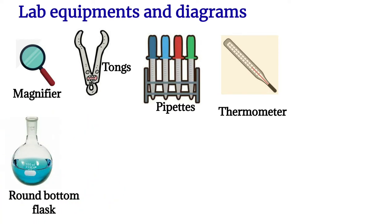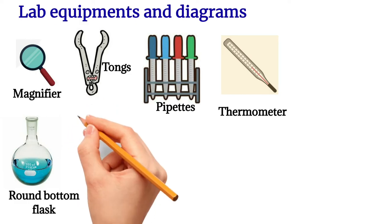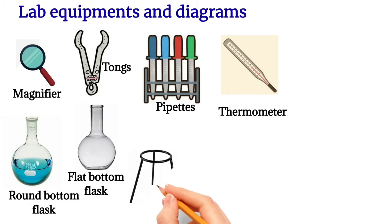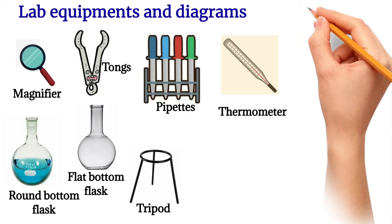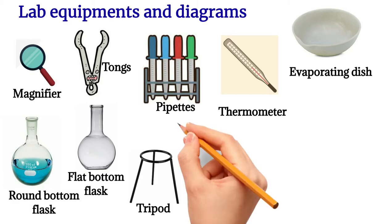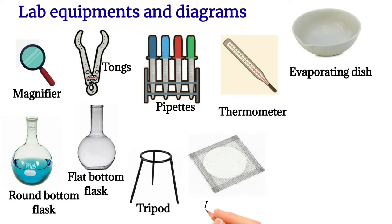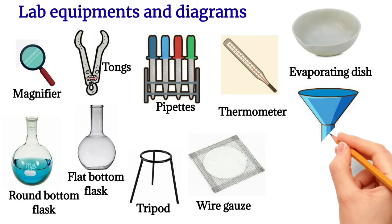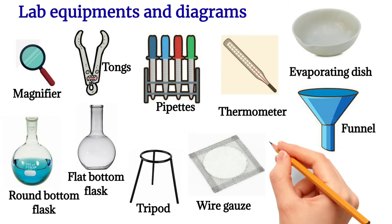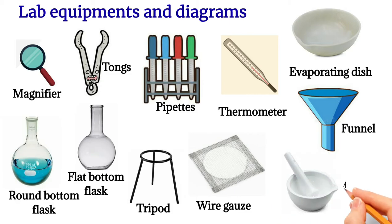This is a thermometer, obviously used to measure temperature. This is a round bottom flask — you can see the bottom is round, that's why it's called a round bottom flask. This is a flat bottom flask because the bottom is flat. Both help to measure the volume of liquid. This is a tripod, which helps to hold the evaporating dish while heating. Next is a wire gauze, which helps to hold the evaporating dish above the tripod. Next is a funnel, and next is a mortar and pestle.